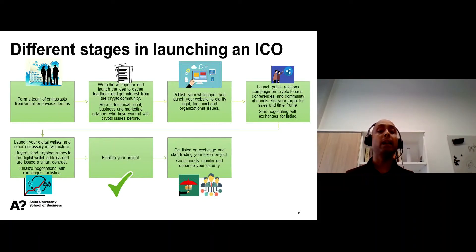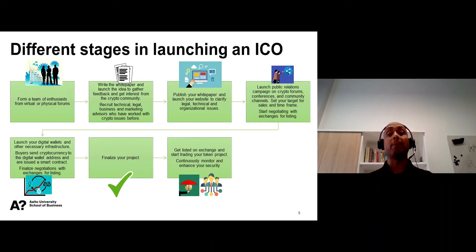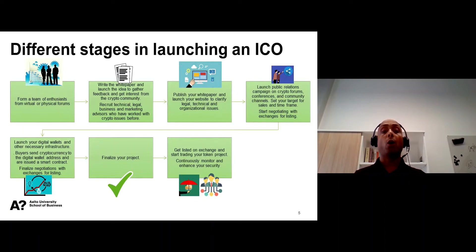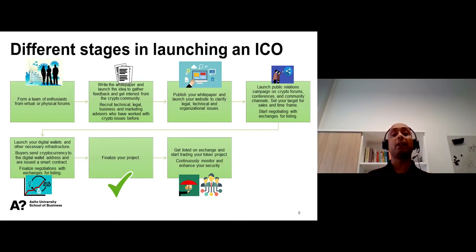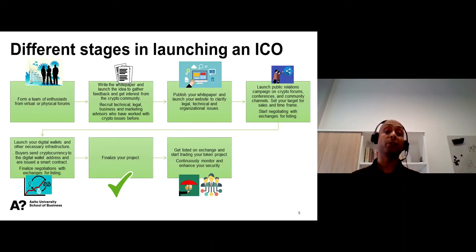Once the idea matures, the third step is to publish the white paper in the public domain, along with a website detailing useful information about your idea, advisors, and team members. All legal, technical, and organizational issues should be appropriately addressed in the white paper. It is also important to talk to regulators to understand the regulatory implications of the proposed ICO. In Finland, the Financial Supervisory Authority offers innovation help services to assist entrepreneurs in understanding the regulatory implications of their proposed projects.